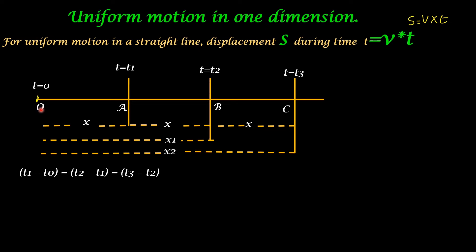So the object covers equal distances in equal intervals of time. This is what we call uniform motion, or uniform velocity, because the distance covered in unit time — that is, velocity — is the same here. It is customary to represent short displacements by the letter x and large displacements by the letter s.